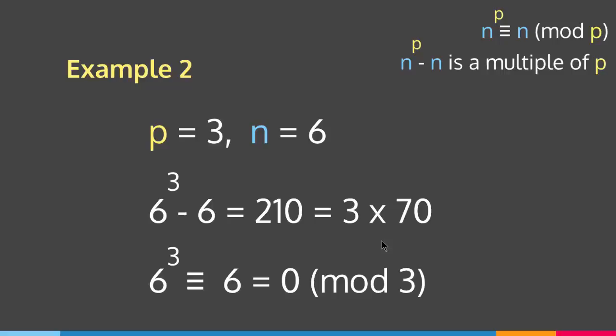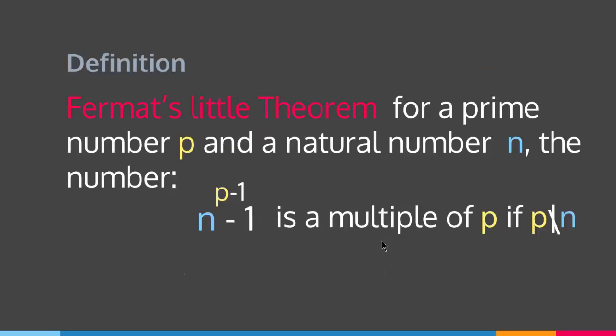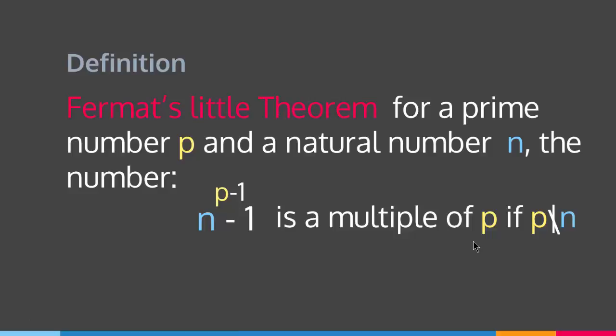This is Fermat's Little Theorem when p divides n. However, what happens if p does not divide n? Then Fermat's Little Theorem says that n to the p minus 1 minus 1 is a multiple of p. For the congruence form, it says n to the p minus 1 is congruent to 1 mod p.